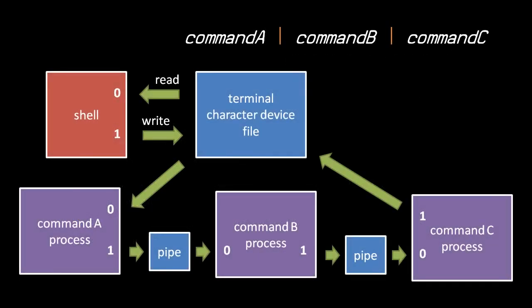When piping commands, we're not limited to just two — we can pipe three or more. With three commands, the first writes its standard output to a pipe read as standard input by the second command, which in turn writes its standard output to a second pipe read as standard input by the third command. Three commands connected by two pipes represent two pipe files. All commands in a pipeline are run in parallel, and the shell waits for all of them to finish.